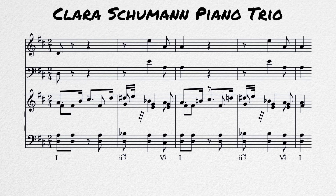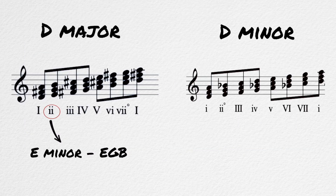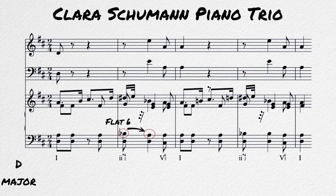An example of this can be found in Clara Schumann's piano trio. The key here is D major, but the second chord given is E half diminished. Normally in the key of D, the two chord is E minor. That two half diminished is borrowed from D minor, and the B flat flat sixth gives us more pull towards the dominant.